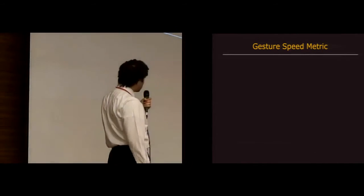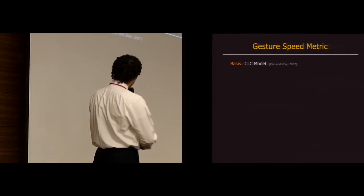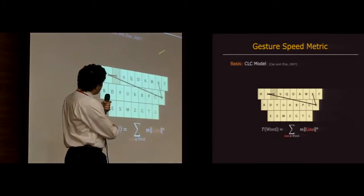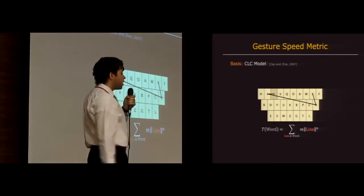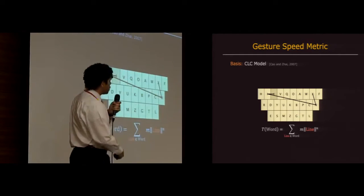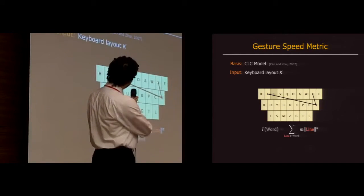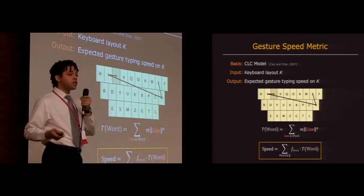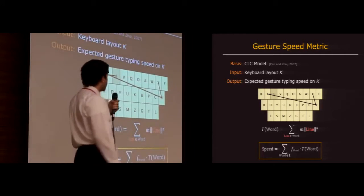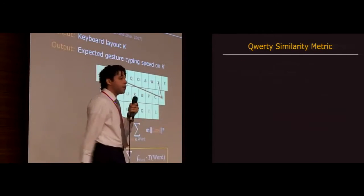Second metric is the gesture speed metric. This is based on the CLC model by Shane Kao and Shumin Jai, which models the time it takes to gesture a polyline as the sum of a power function of the lengths of those line segments. So this metric takes the keyboard layout as input and it outputs the expected gesture typing speed on that layout by finding the weighted average of these gesture entry times, then converting that to words per minute.